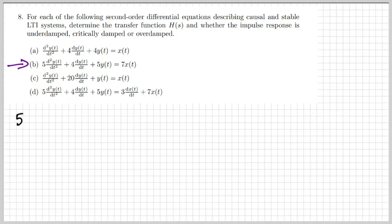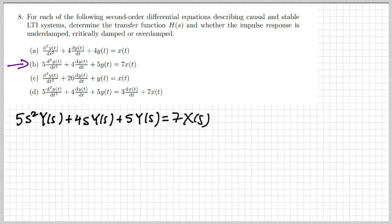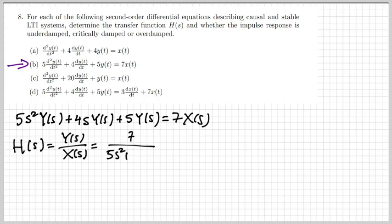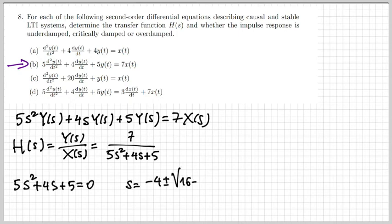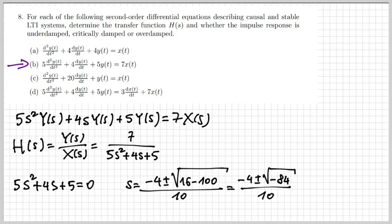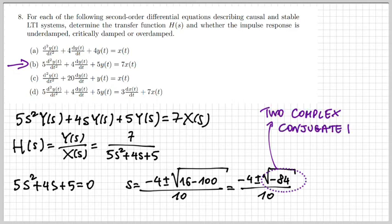In part B I again calculate the Laplace transform of both sides and obtain H(s) as the ratio of Y(s) and X(s). Looking at the roots of the denominator, the expression inside the square root is negative, which means the roots are two complex conjugate poles. When there are two complex conjugate poles, the system is underdamped.